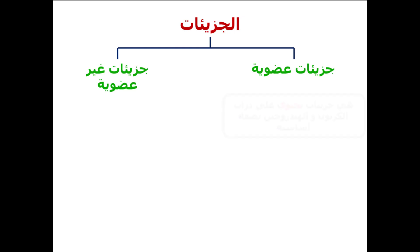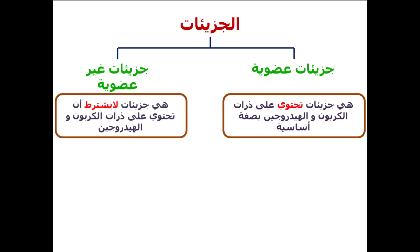إيه الفرق بين الجزيئات العضوية والغير عضوية؟ الجزيئات العضوية تحتوي على الكربون والهيدروجين والأكسجين، والكربون والهيدروجين أساساً موجودين في الجزيء العضوي. أي مركب عضوي لازم يكون فيه كربون وهيدروجين. أما الغير عضوي لا يشترط أن يوجد فيه كربون وهيدروجين.